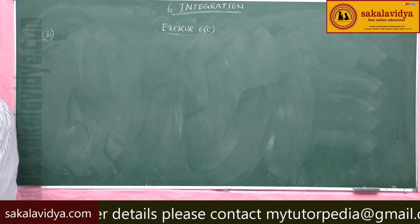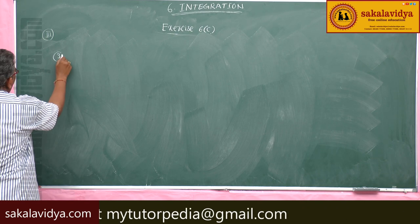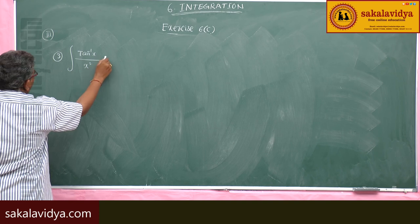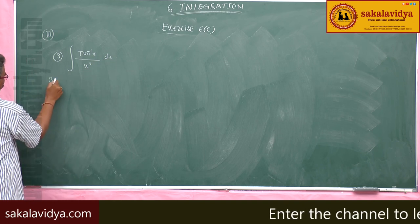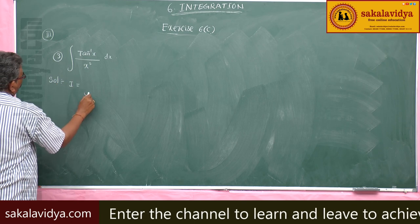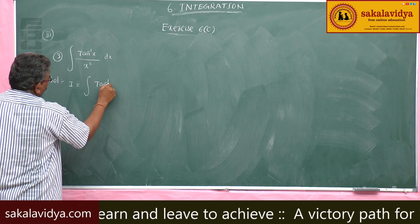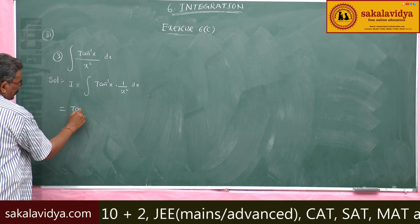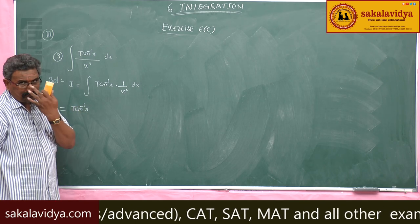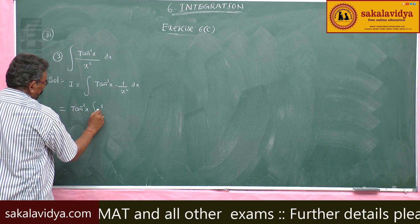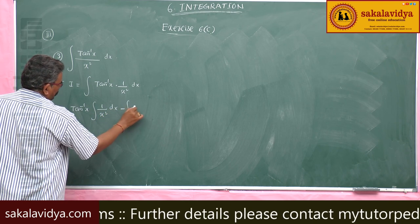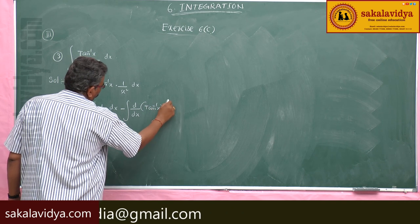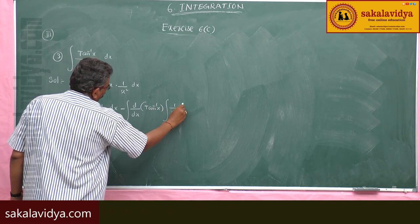Let us move to the third problem. Third one: integral of tan inverse x by x squared dx. Solution: I is equal to integral of tan inverse x into 1 by x squared dx. The first function is tan inverse x, and the integral of 1 by x squared is the second function.